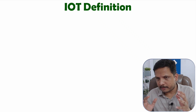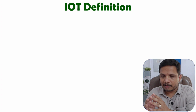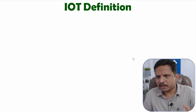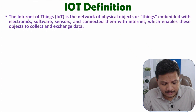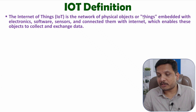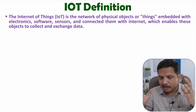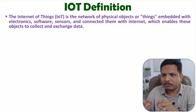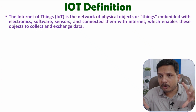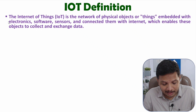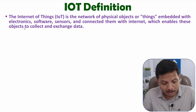IoT is Internet of Things where we interface things with internet, by which we optimize resources and save time for humans. The first definition states: IoT is the network of physical objects or things. It is not just one device — there is a network of so many devices, using embedded electronics, software, and sensors, all connected together on internet, which enables these objects to collect and exchange data.